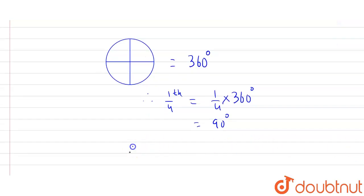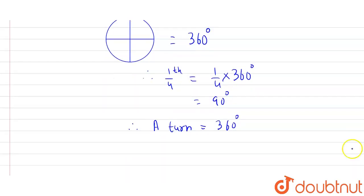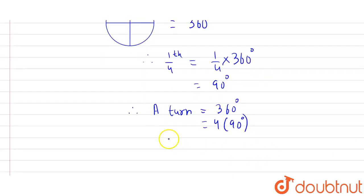Therefore, one turn equals to how many angle, 360 degrees or how many right angles. 4 90 degrees means 4 right angles. Therefore, one turn equals to 4 right angles. Let us say this is our equation first.